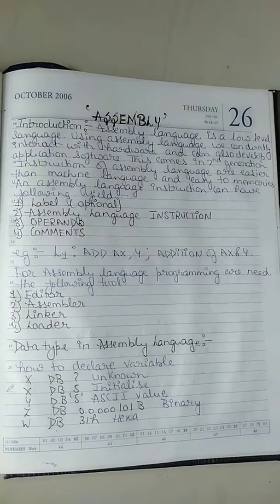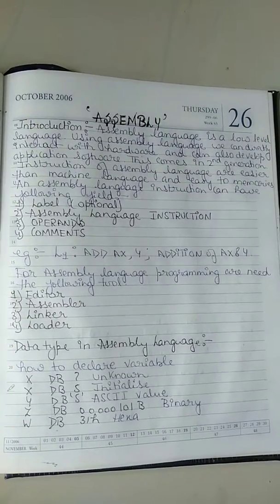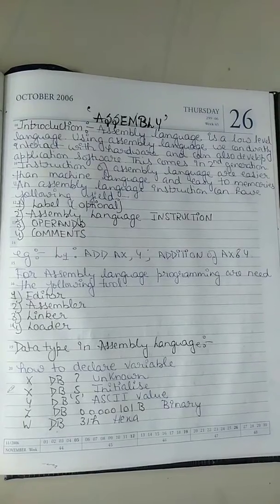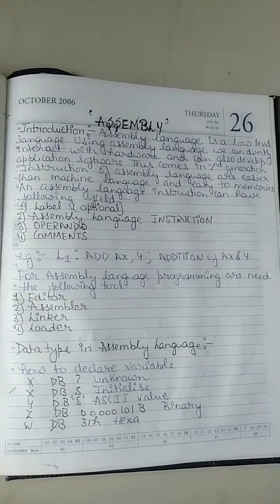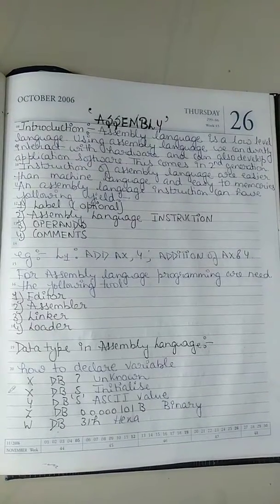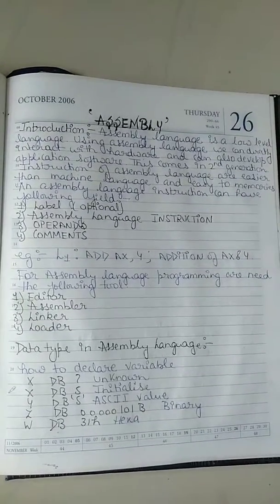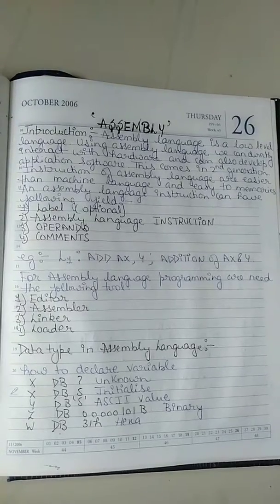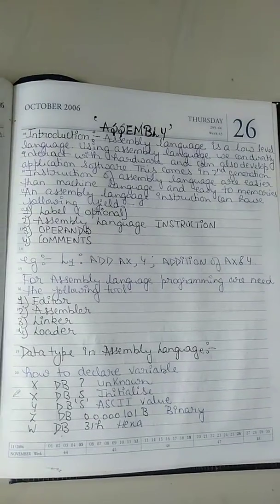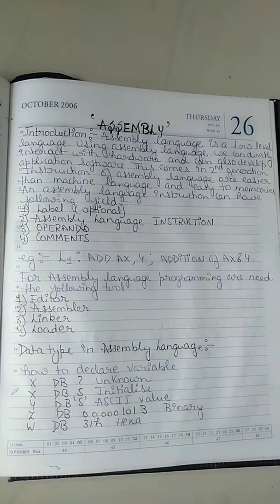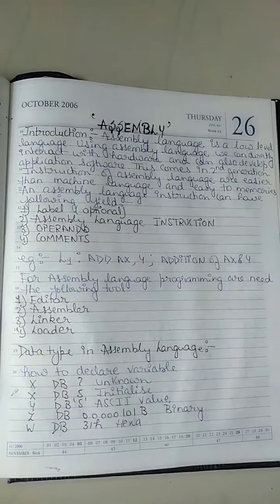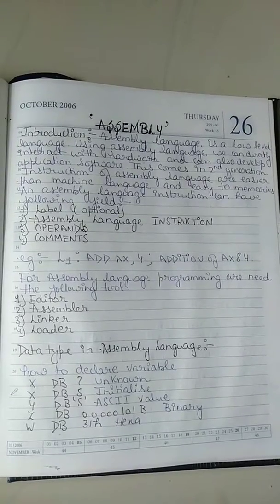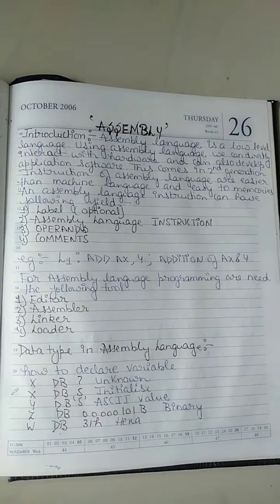Instructions of assembly language are easier than machine language and easy to memorize. Assembly language instructions can have the following fields. These are the four fields of assembly language. Number one is label, which is optional — you may write it or not, no issues in that.